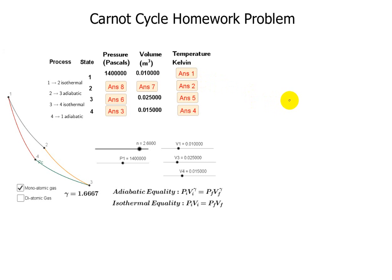In this Carnot cycle problem, we're given four state variables for the ideal gas, as well as a gamma value of 1.666 for the monatomic gas, and asked to find the other eight state variables.